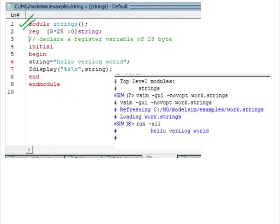And this is the code that I have written in ModelSim software. So this is the string declaration. Then this is the string 'Hello Verilog world.' Then we are displaying here the string. And this %s is called format specifier. This is called format specifier in Verilog to display any string.